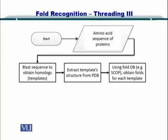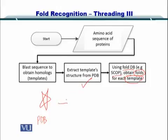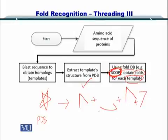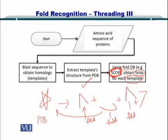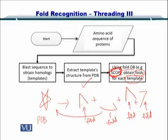After this, you go to the fold database such as SCOP to obtain the folds for each template. So if you had a structure for a protein and obtained its PDB entry, you then go to the SCOP database and obtain the various folds that combine to give you the complete structure. Each one of them is a fold, and now you can individually deal with these folds.